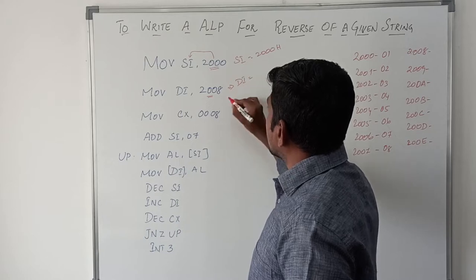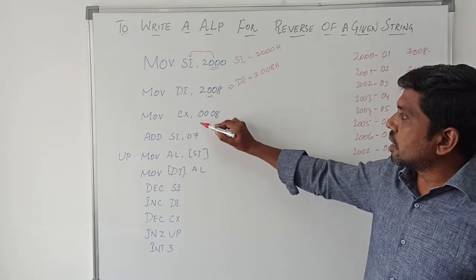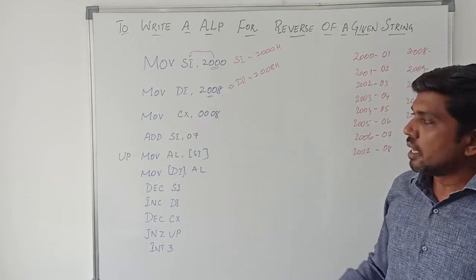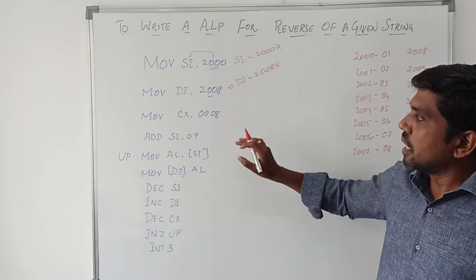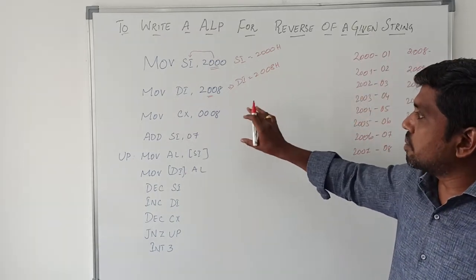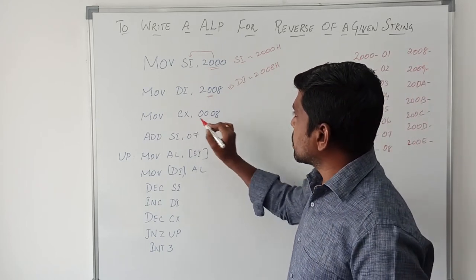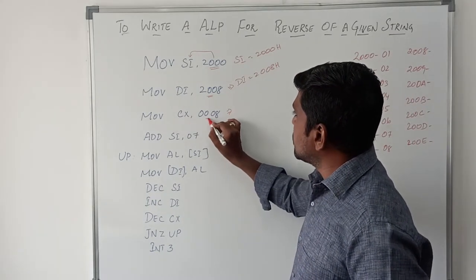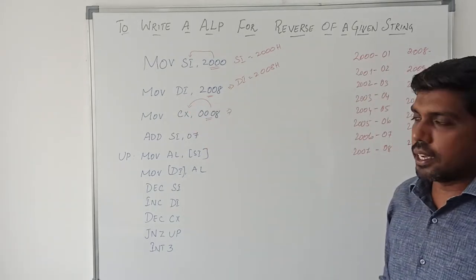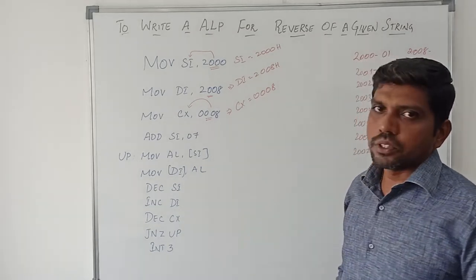Now the destination index value is 2008H. The third instruction is MOV CX, 0008H. This instruction refers to how many data items are transferred from source point to destination point. In this program, I am taking 8 values. So 8 values transfer from source point to destination point. After execution of this instruction, the immediate value 0008 is transferred to the CX register. Now CX value is 0008.